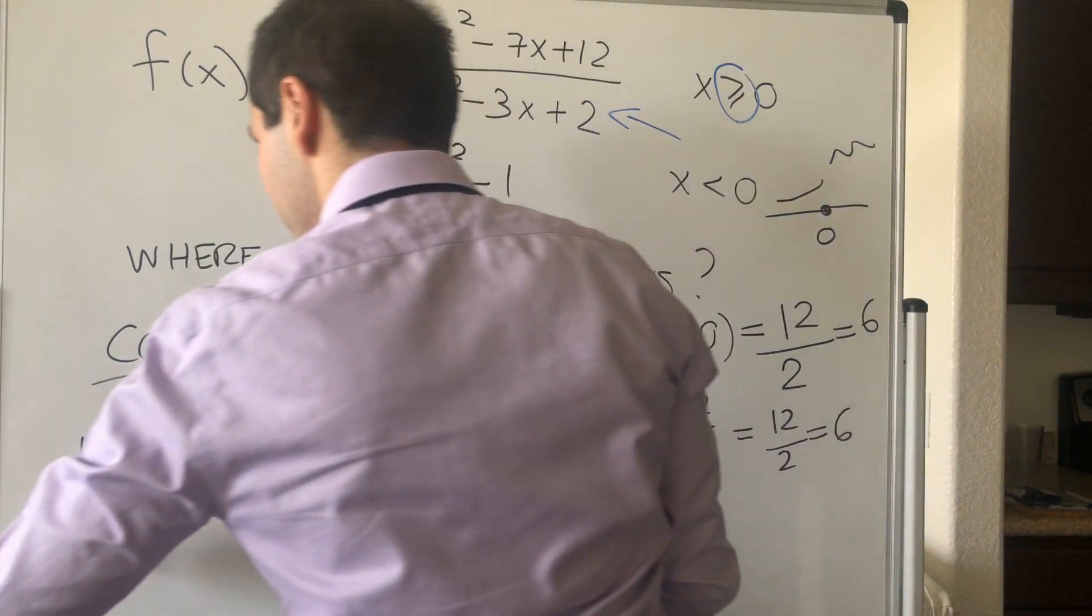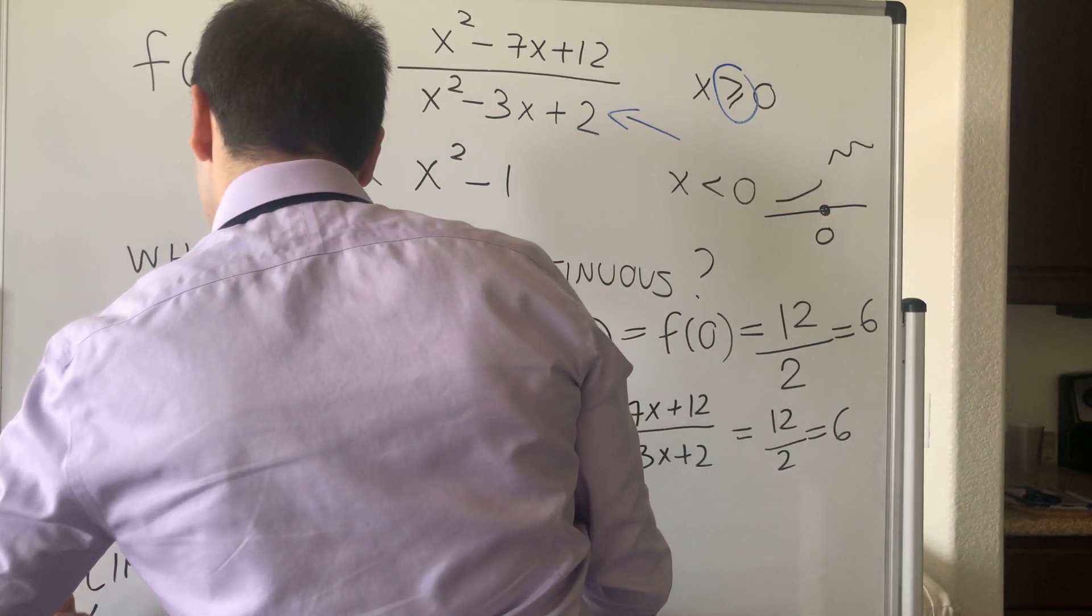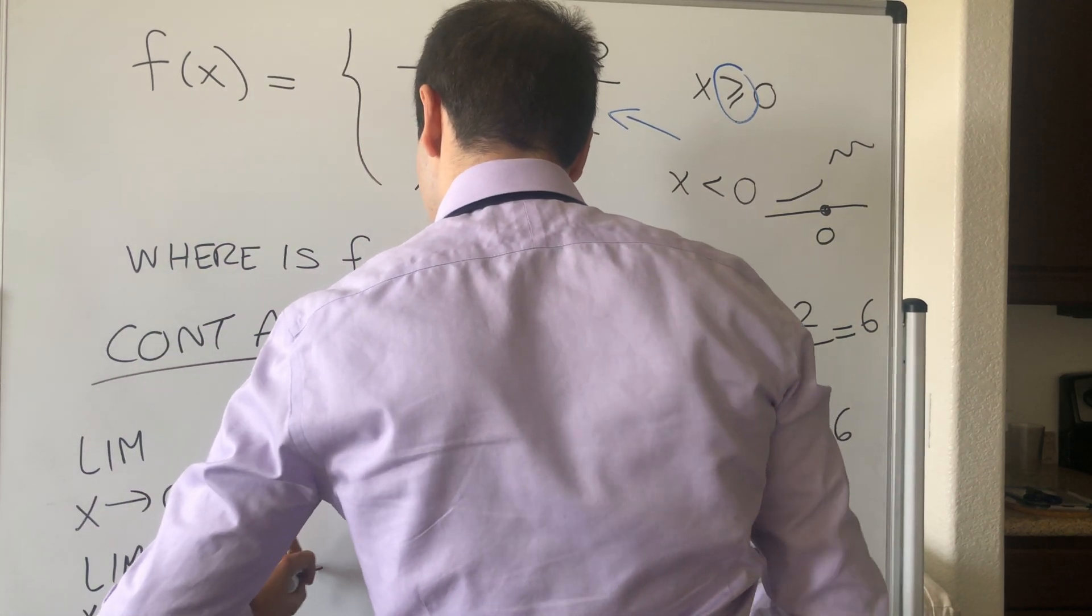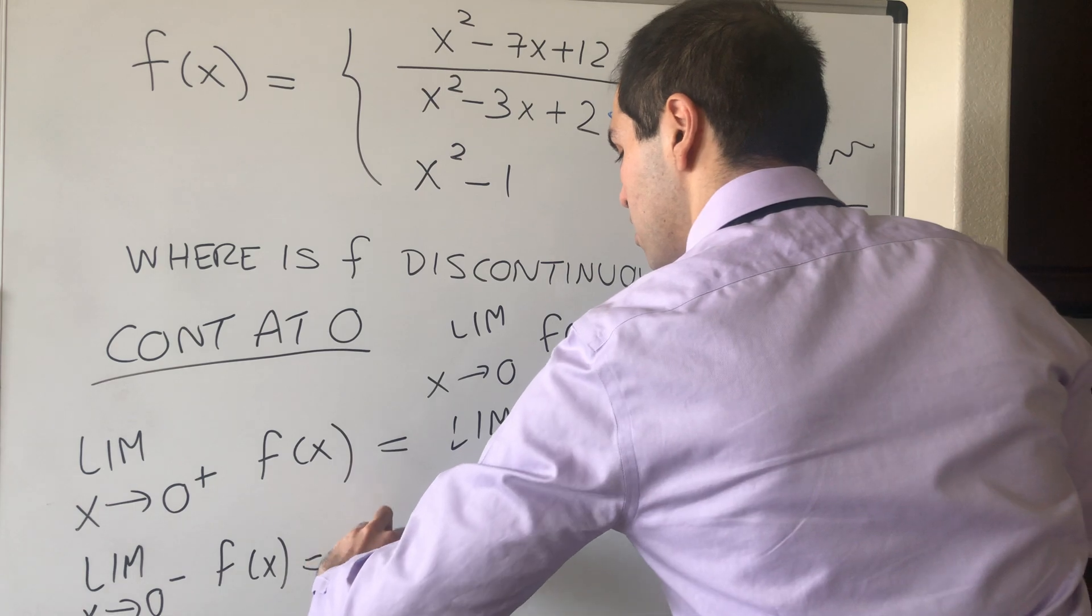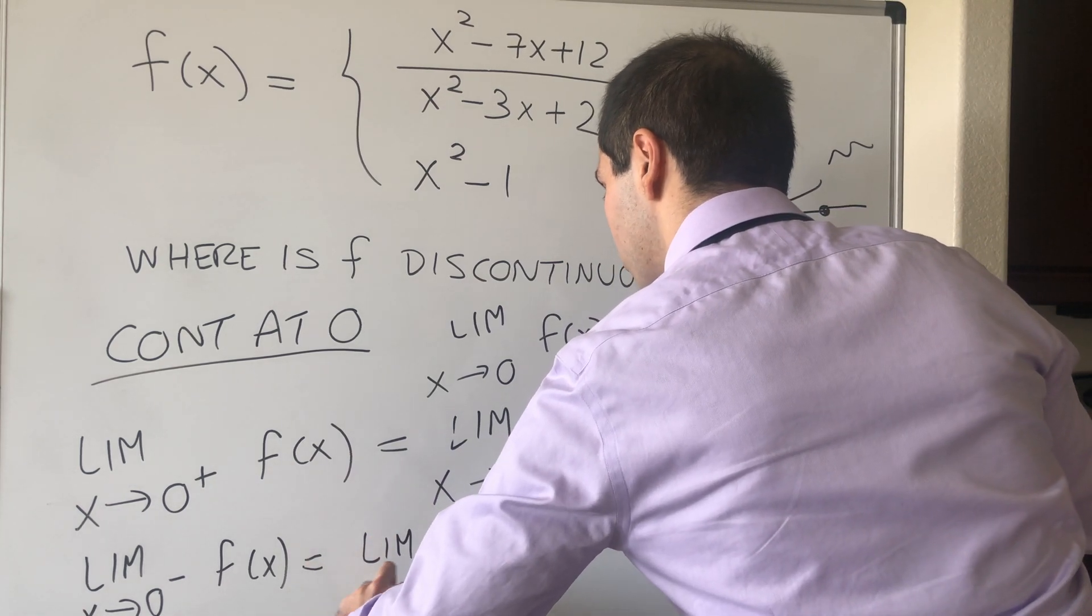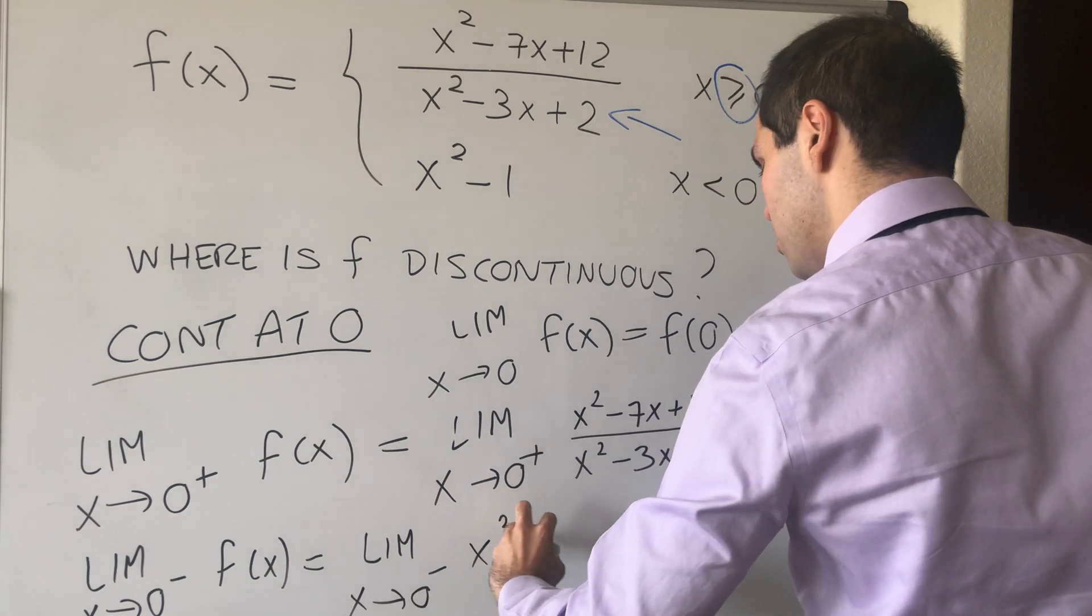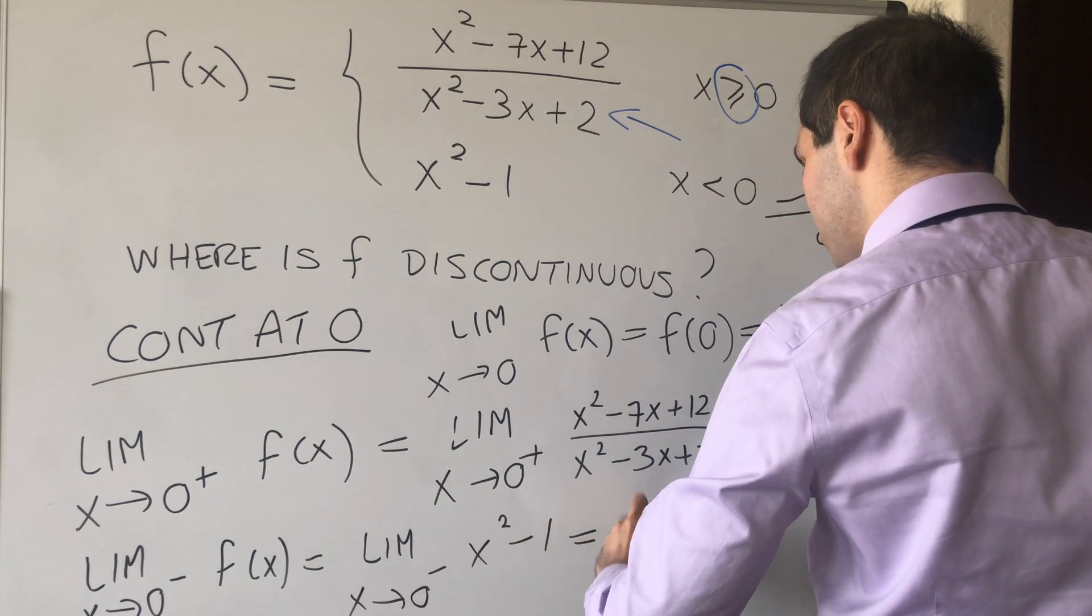Let's look at the left-hand side limit. So limit as x goes to 0 minus of f of x. That's just the limit as x goes to 0 minus of x squared minus 1, and that becomes minus 1.